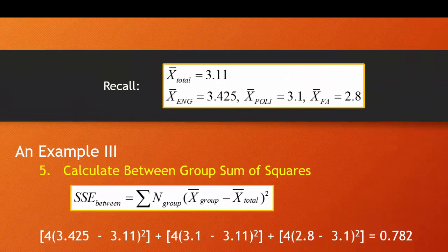Next, we calculate the between-group sum of squares — essentially how far each group mean differs from the overall mean of 3.11. We take n (the number within each group, which is 4) times each group mean minus the overall mean, squared. So: 4×(3.425 − 3.11)² plus 4×(3.1 − 3.11)² plus 4×(2.8 − 3.11)². Once you calculate all the way across, the between-group sum of squares equals 0.782.